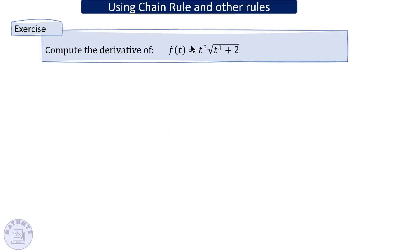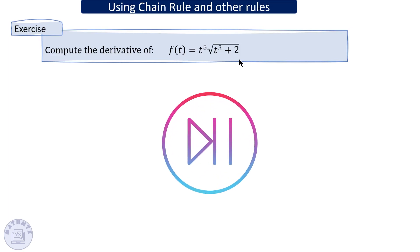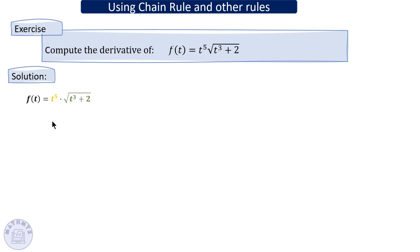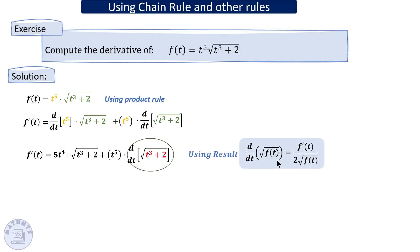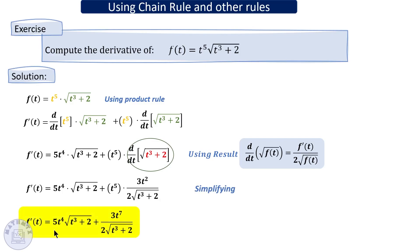Let's practice more. This is a product between two functions, so apply the product rule: derivative of the first times the second, plus the first times the derivative of the second. The derivative of the first gives 5x to the power four. For the derivative of the second function — a square root — use the previous result. Then simplify: t to the power five times t to the power two means adding the exponents.